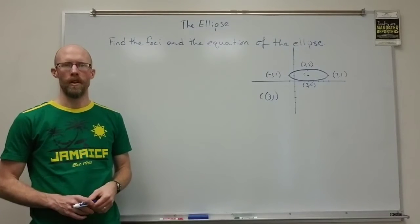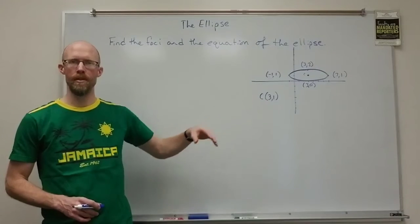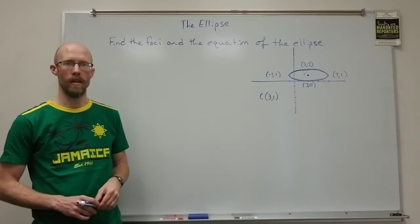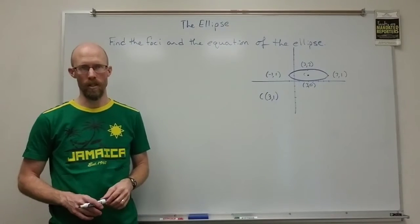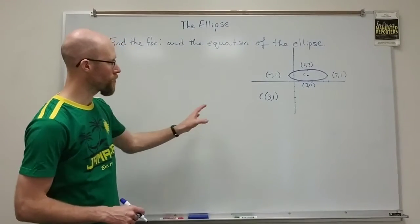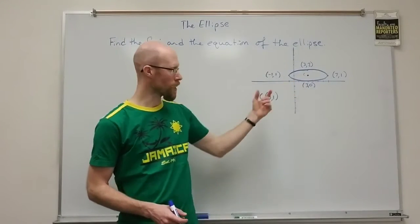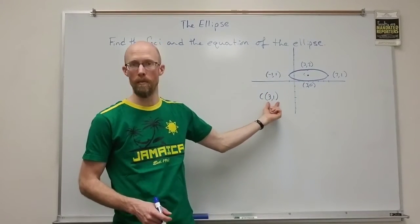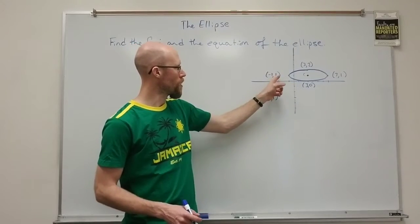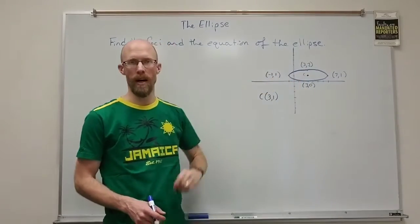In this example we're looking at the graph of an ellipse and I want to find the foci and the equation of the ellipse. Now I'm given some information. I'm given the center of the ellipse being at 3 comma 1 and then I have four points on the ellipse.